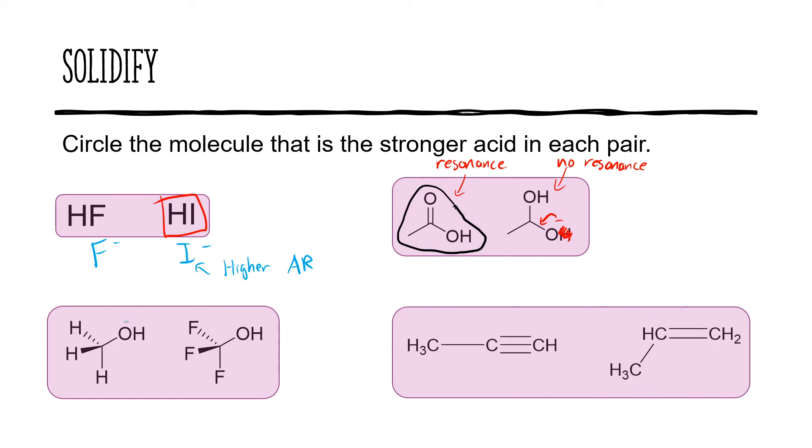Looking at the example on the bottom left now, the difference is whether we have three hydrogens or three fluorines. As usual, we're going to be considering the conjugate base. So let's get rid of that acidic proton and put the negative charge on the oxygens. And here we have hydrogens, which are not very electronegative.